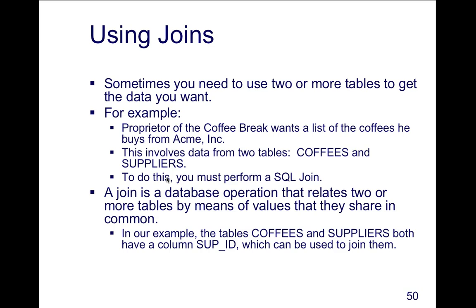You can also join tables through SQL. Sometimes you need to use two or more tables to get the data you want. Anything you can do in SQL you can do through JDBC. For example, a proprietor of Coffee Break wants a list of coffees they buy from Acme Inc. — this involves data from two different tables: coffees and suppliers. To do this, you perform a SQL join: a database operation that relates two or more tables by means of values shared in common, performing a join on the supplier ID field.